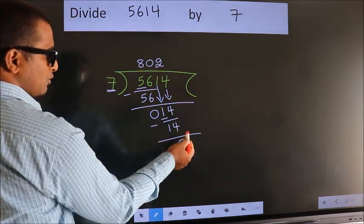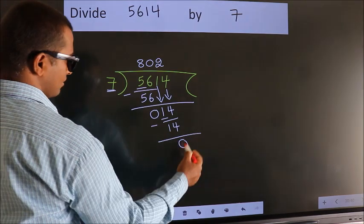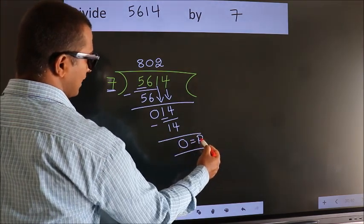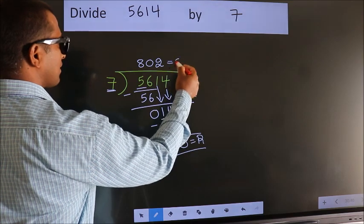No more numbers to bring it down. So we stop here. This is our remainder. This is our quotient.